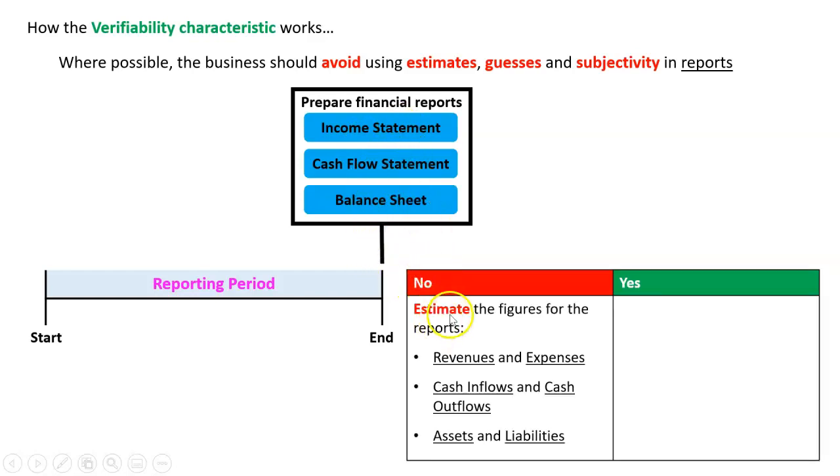In these three things here, we do not want to have estimates for revenues and expenses, cash inflows, cash outflows, assets, liabilities. That's not business. That's not accounting. No estimates here. What we should have is we should report the exact figures from the accounting system. And each of those figures has a bunch of source documents as evidence.